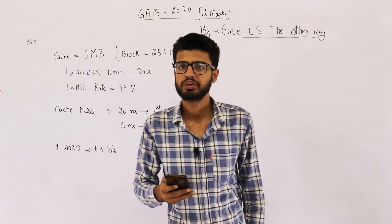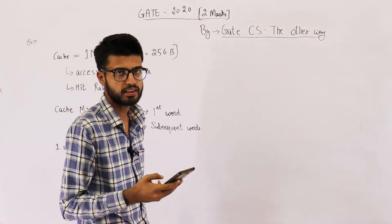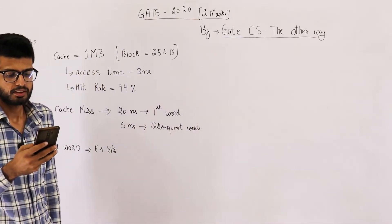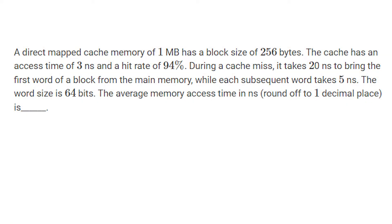Hi students, I'm back with a question from the 2020 GATE exam. It's from the subject computer architecture and organization. The question is: a direct mapped cache memory of 1 MB has a block size of 256 bytes. The cache has an access time of 3 nanoseconds and a hit rate of 94 percent.